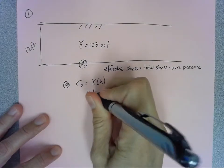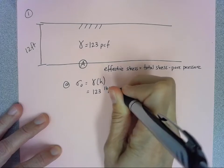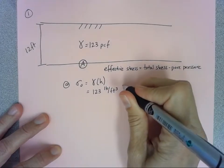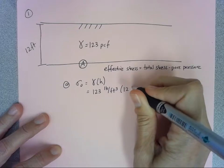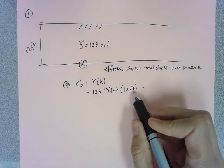So we'll call that 123 and I'll write it this way, pounds per cubic foot for the units, and then we're going to multiply that by 12 feet.